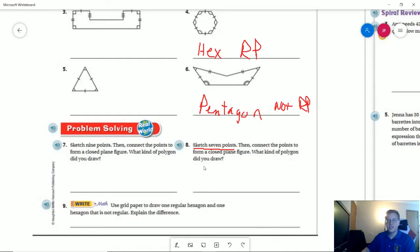Number eight, if I drew seven points and connected the dots to make a closed plane figure, I would have a heptagon.